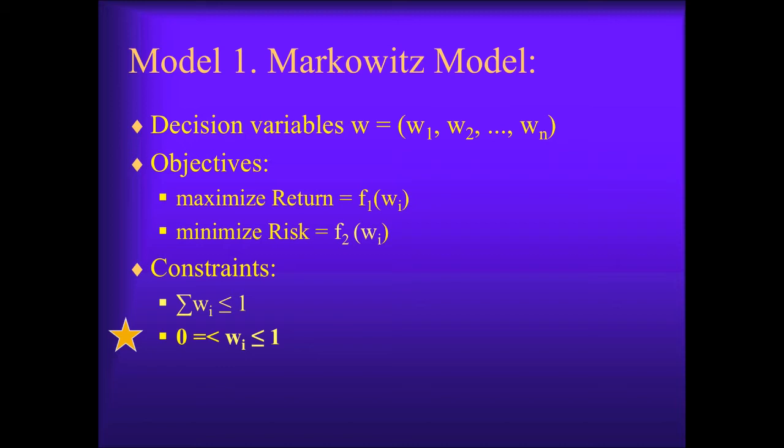Return F1 is the sum of the returns of the individual assets weighted by their proportion in the portfolio. Risk F2 is a function of the variance and covariance of the returns of the assets. Details of F1 and F2 do not affect the rest of our discussions here.